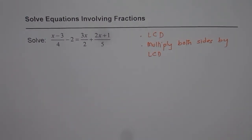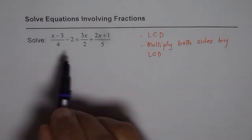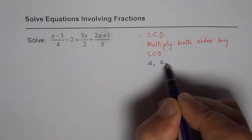So let us see what is the lowest common denominator. The numbers here are 4, 2 and 5.